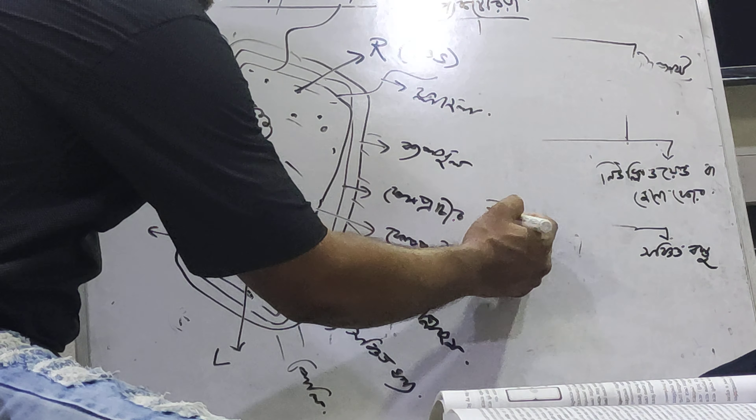This is the ribosome. The ribosome is 70S, which is prokaryotic. The ribosome is 70S, which is 50S plus 30S.